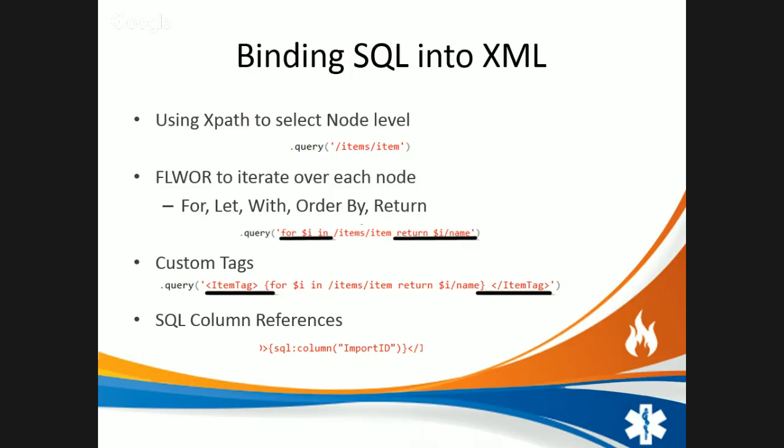To bind SQL into XML, I'll use XPath on the XML you're selecting from. You can use the FLWOR — for, let, where, order by, return — logic to iterate over the XML. You can include custom tags to create a whole new XML set in the output, and reference SQL columns using sql:colon and the column name.